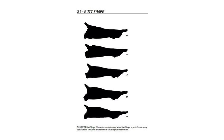Butt shape relates to the shape of the actual carcass butt. They are scored from A to E, and it's related to muscle scoring and the amount of muscle on the animal's body, and therefore the size of the cuts.